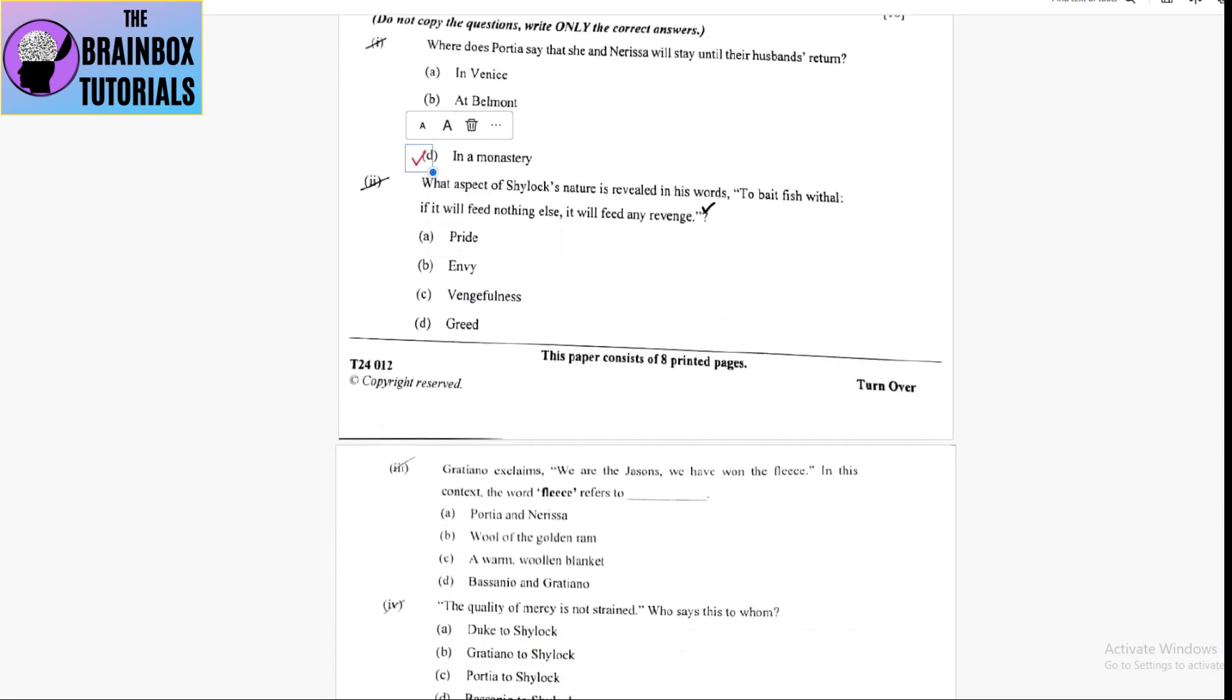Number 2, what aspect of Shylock's nature is revealed in his words to bait fish withal? If it will feed nothing else, it will feed my revenge. Number A, pride. Number B, envy. Number C, vengefulness. Number D, greed. It is vengefulness. That is his revenge.